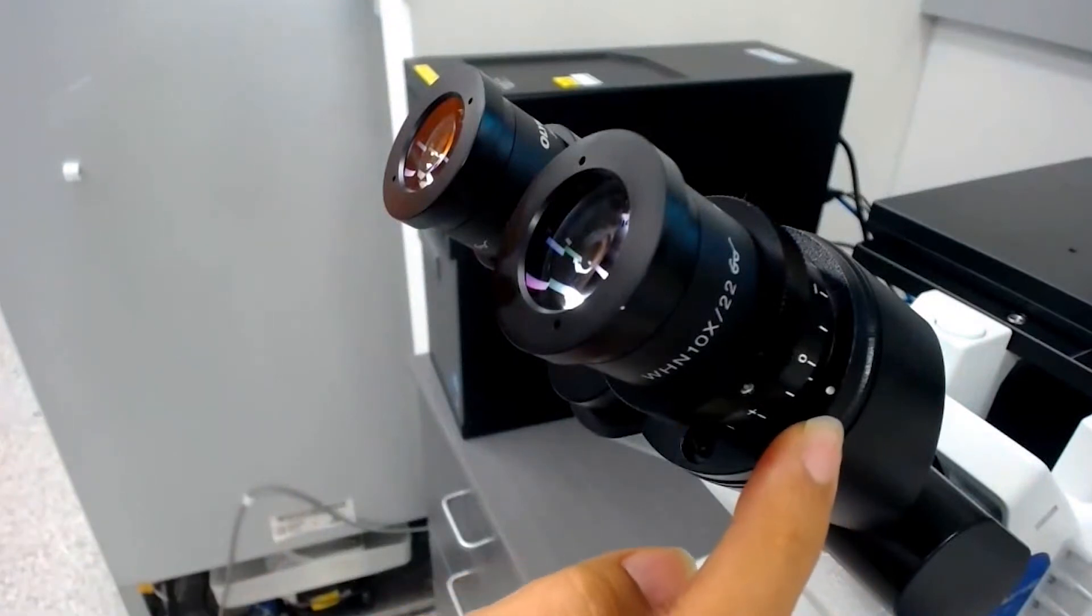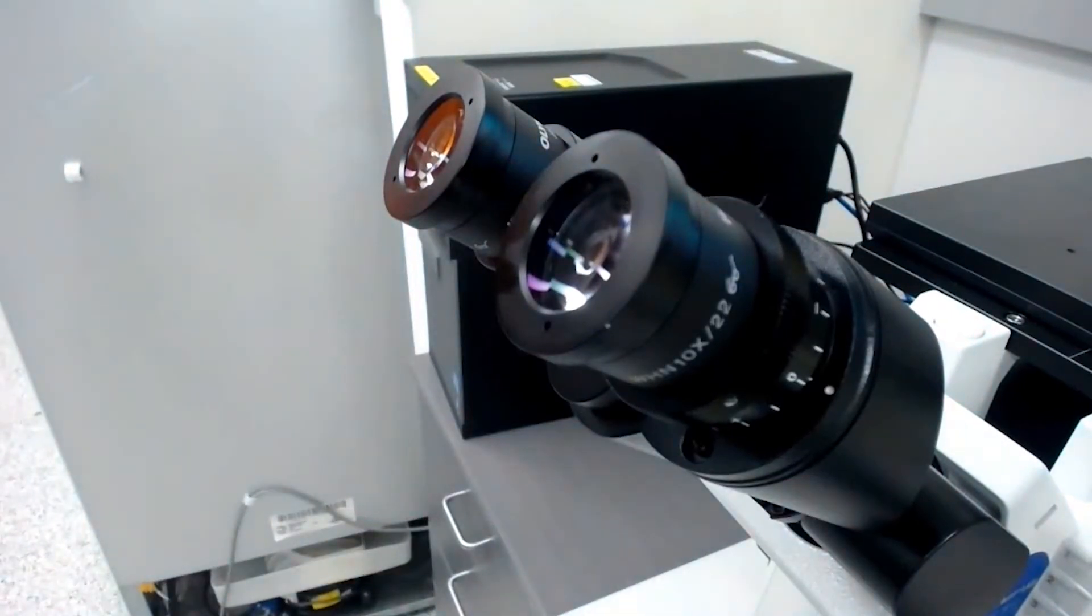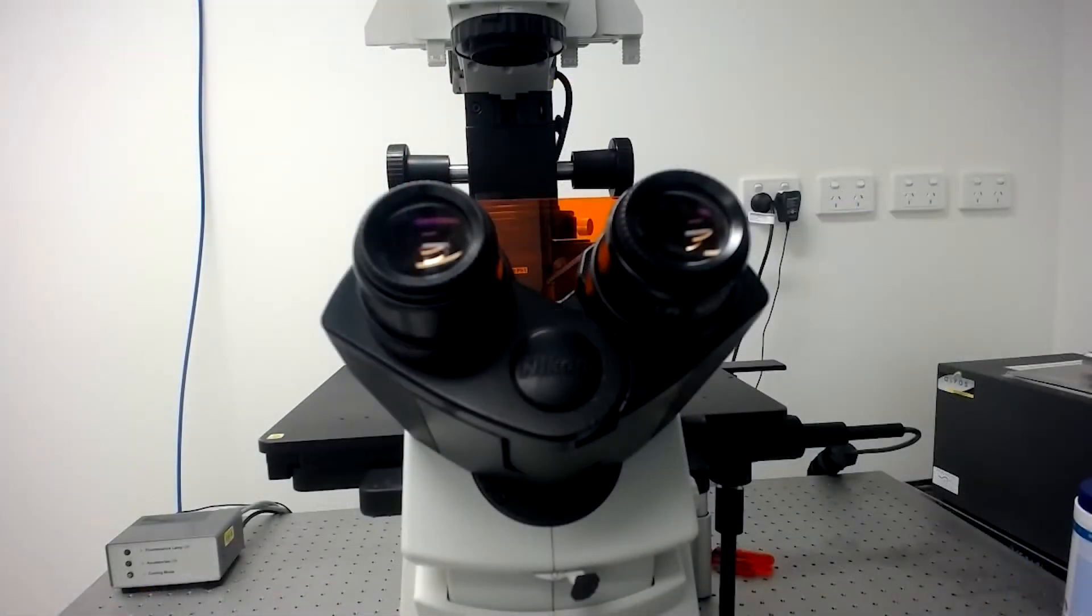Set the diopter adjustment on both eyepieces to the zero position by rotating the eyepiece as shown. Markings may vary between manufacturers and models of microscope.